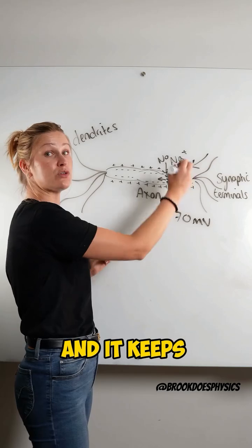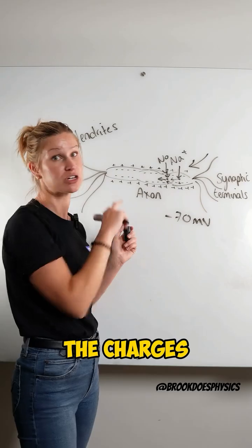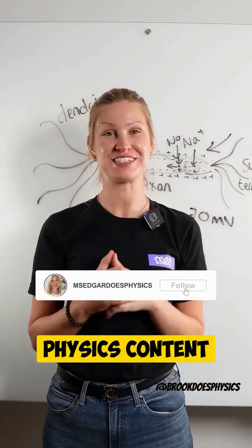It keeps moving along your axon through those electrical impulses because of those differences in the charges. Follow me for more physics content like this.